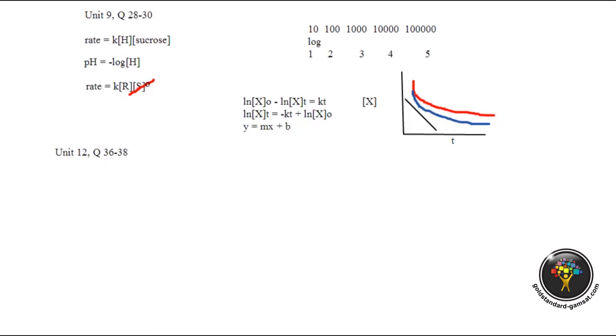Ka is an equilibrium constant, so it gives you the concentration of the different components at equilibrium. Therefore, the pKa gives us the pH at the equilibrium, right? Because if pKa is negative log Ka, and Ka is the equilibrium constant, then the pKa is giving you the pH at equilibrium. We know that the equilibrium for thymolphthalein has a pKa value of 10.